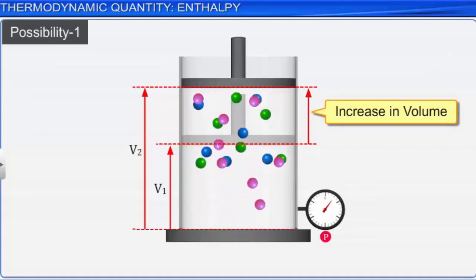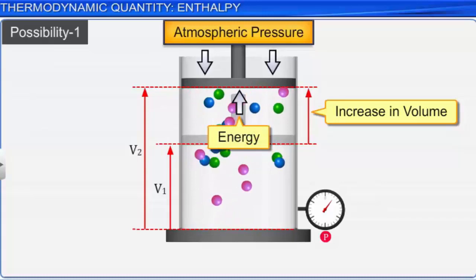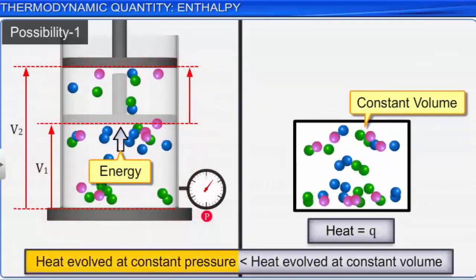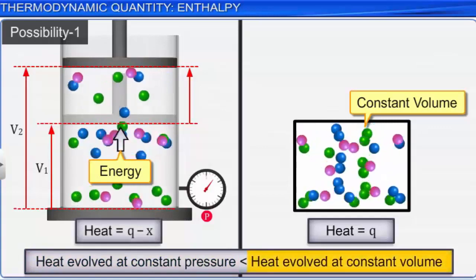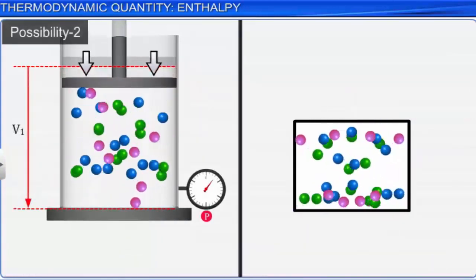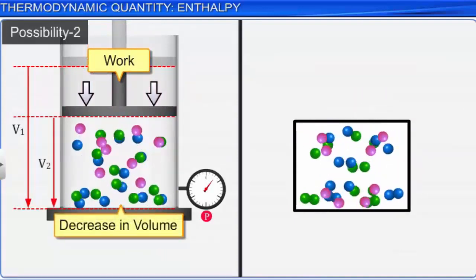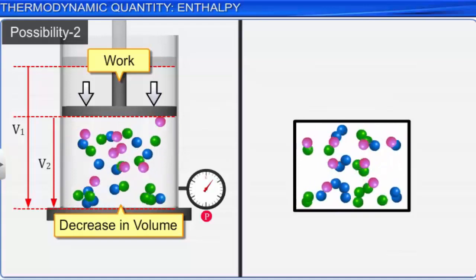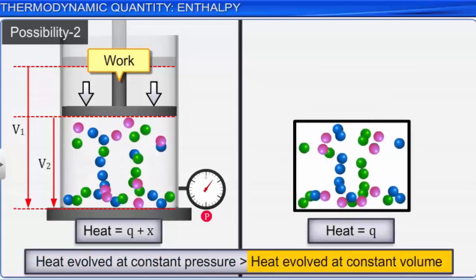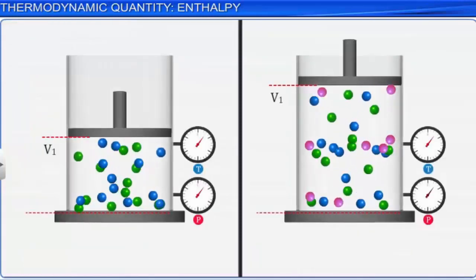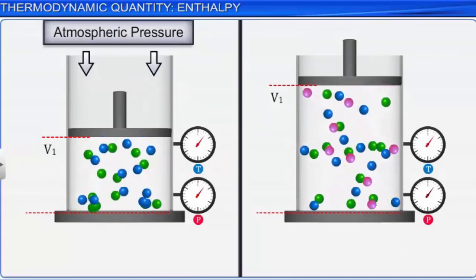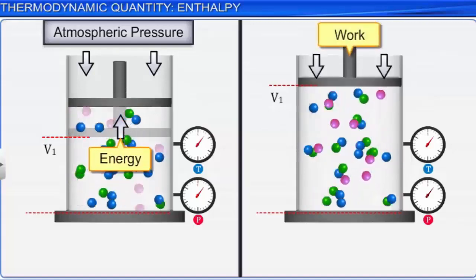When the reaction proceeds at constant pressure, two possibilities arise. If the reaction is carried out with increase in volume, the system has to expand against atmospheric pressure, and energy is required to perform this act. As some energy is utilized for this purpose, the heat evolved would be a little less than the heat evolved at constant volume. The other possibility is if the reaction is carried out with decrease in volume at constant pressure — then work is done on the system and heat evolved would be greater than the heat evolved at constant volume.